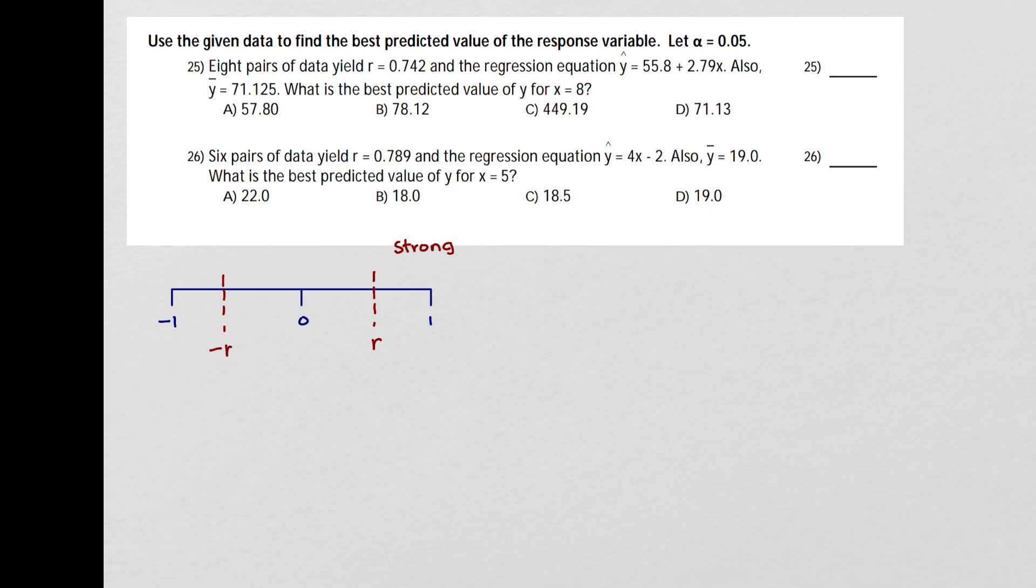Or if it's closer to negative 1, there's also a strong relationship. Just in that case, it would be a strong negative relationship. And then if we fall in the middle, then there is a weak or no linear relationship.